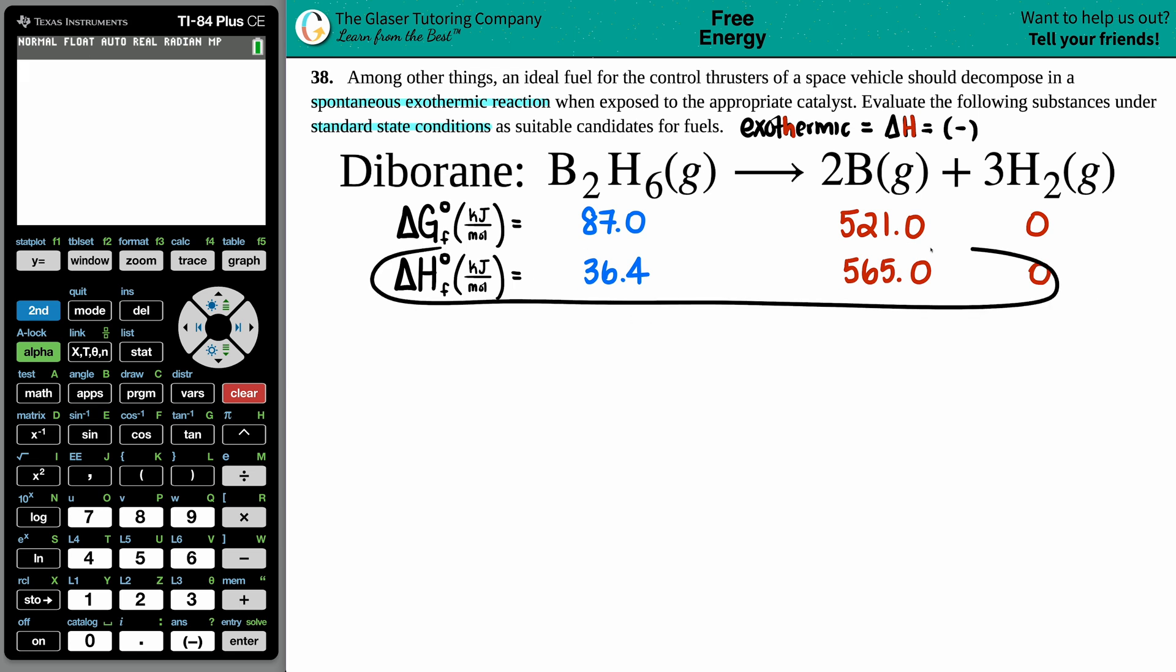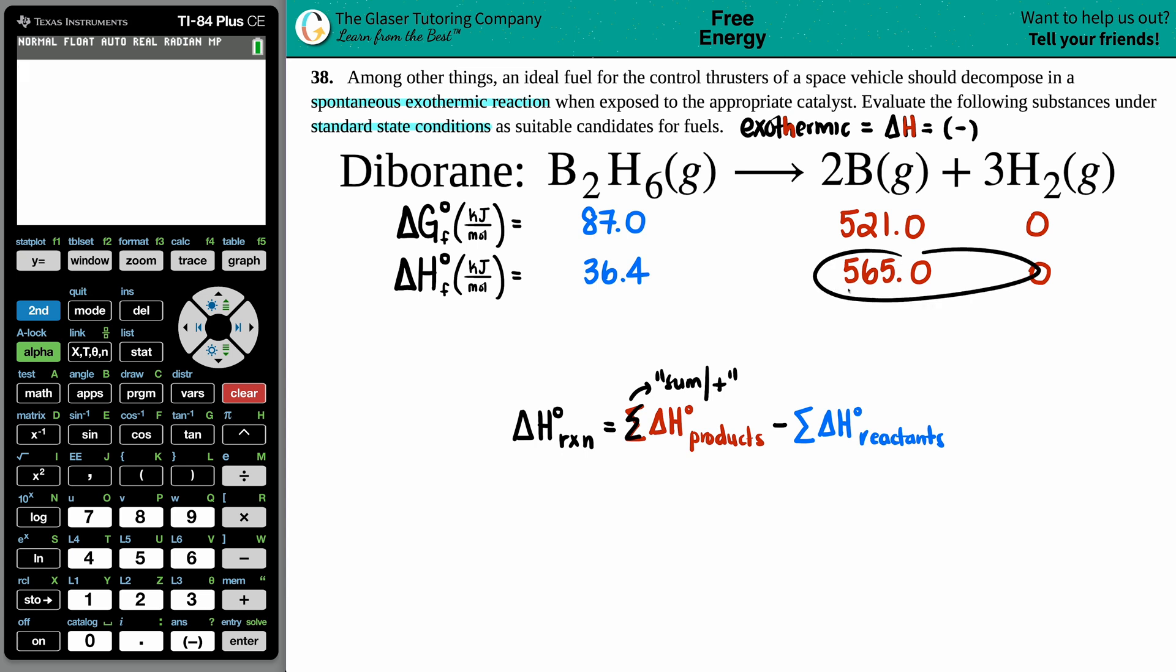I'm only going to use the delta H values so what formula are we going to use? Well, it's this one right here: delta H for a whole entire reaction is equal to the sum—that's the addition—so we got to add up all the products, delta H of the products, and subtract by the sum of all the delta H's of the reactants.